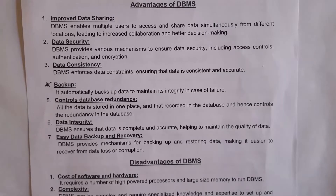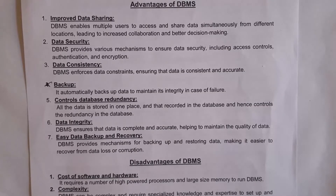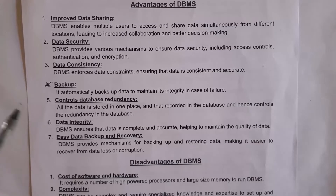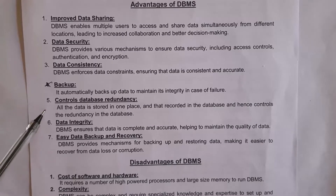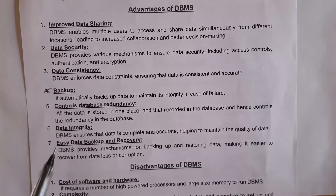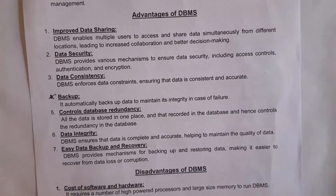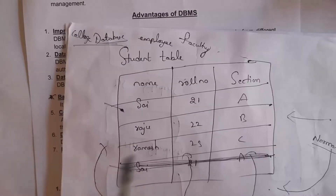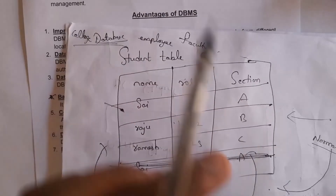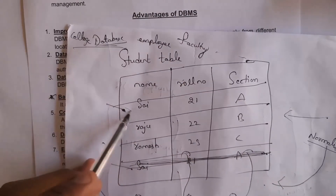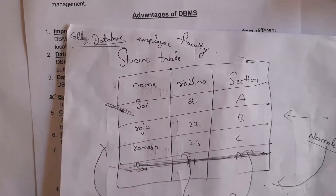The fourth advantage is backup. A database management system contains automatic backup, so even if any failure occurs, we can easily recover data. The fifth advantage is controls data redundancy. Redundancy means duplication. The database will not allow duplicate values. All the data is stored in one place, so it is easy to identify duplicate values.